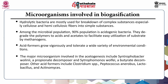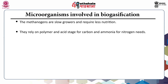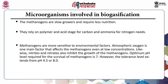Other acid formers include Clostridium species, Peptococcus, Lactobacillus, and Actinomyces. Methanogens are slow growers requiring very little nutrition; they rely on polymers and acids for carbon and nitrogen. They are sensitive to environmental conditions like pH and atmospheric oxygen. Atmospheric oxygen inhibits methanogens even at very low concentrations, and nitrates and nitrites also inhibit their growth.